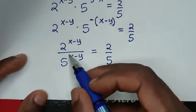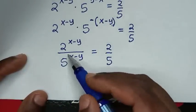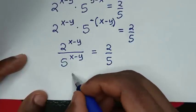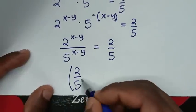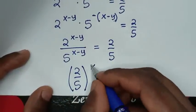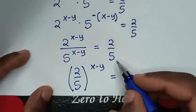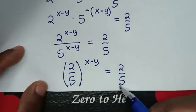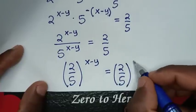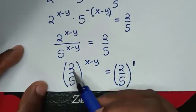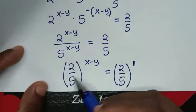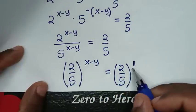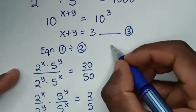Since we have the same power of (x minus y) in a division, we write (2 over 5) power of (x minus y) equals 2 over 5. Since 2 over 5 on the right is the same as (2 over 5) power of 1, and the bases are equal, we compare the powers: x minus y equals 1.